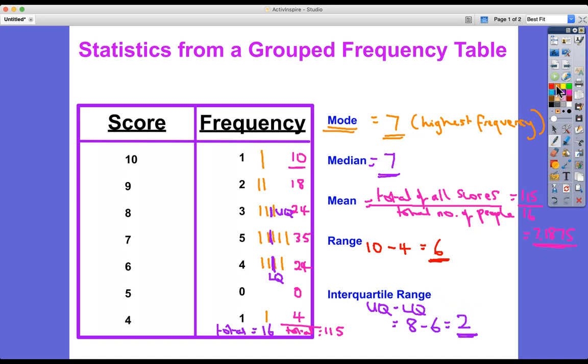Now, another way that you could do it, and also to find the median, is to list the values. So we had one person who got a score of 10. It's quite time consuming. But if you weren't sure, you could just go and confirm it. We've got three people who got a score of eight. We've got five people with a score of seven. We've got four people with a score of six. And we've got one person scored four.